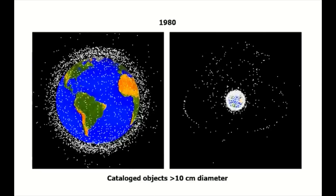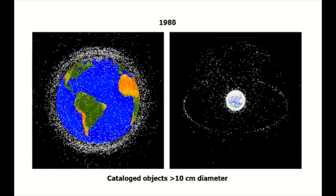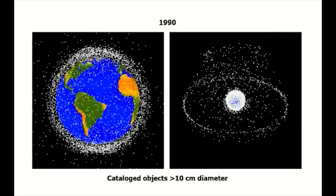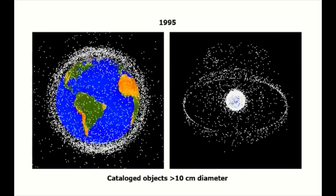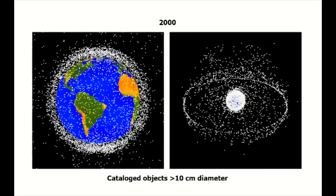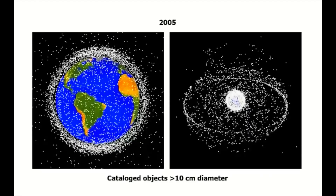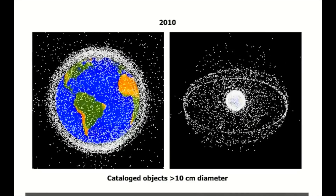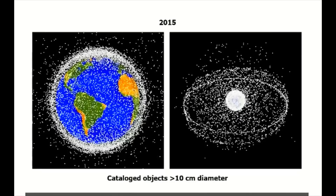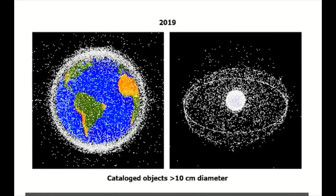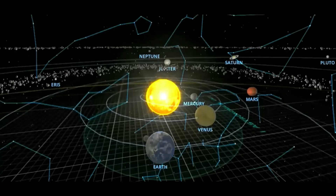Each white dot in this image shows either a functioning satellite, an inactive satellite, or a piece of debris. Although the space near Earth looks crowded, each dot is much larger than the satellite or debris it represents. From 1960 to 2019 you can see the accumulation of clutter through the years.